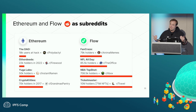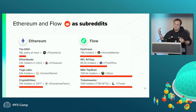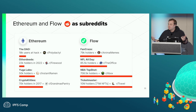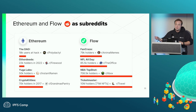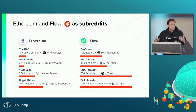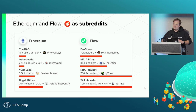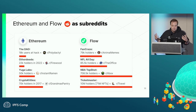Yuga Labs as a whole — including CryptoPunks and the Proof Collective — has 50,000 total holders, the same size as the instant ramen community on Reddit. CryptoKitties in 2017, when it was causing massive scalability issues on Ethereum and forcing ICOs to be delayed, had roughly 70,000 holders — the same size as the grandma's pantry Reddit community, where people share interesting pictures of what's inside their grandparents' pantries.